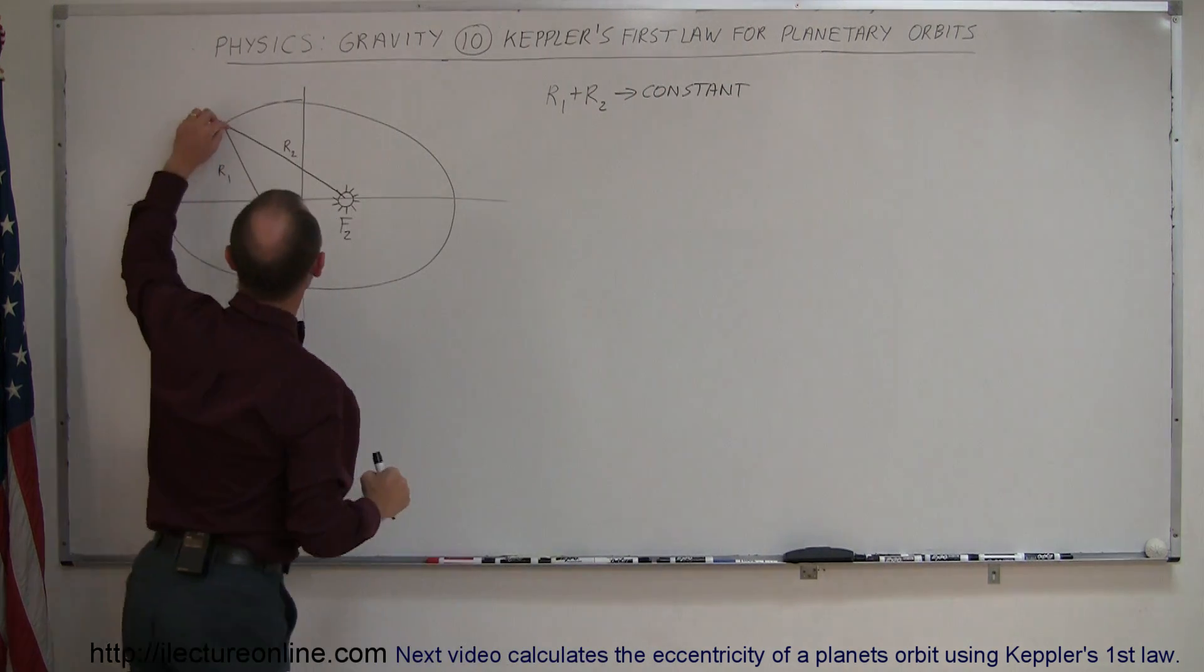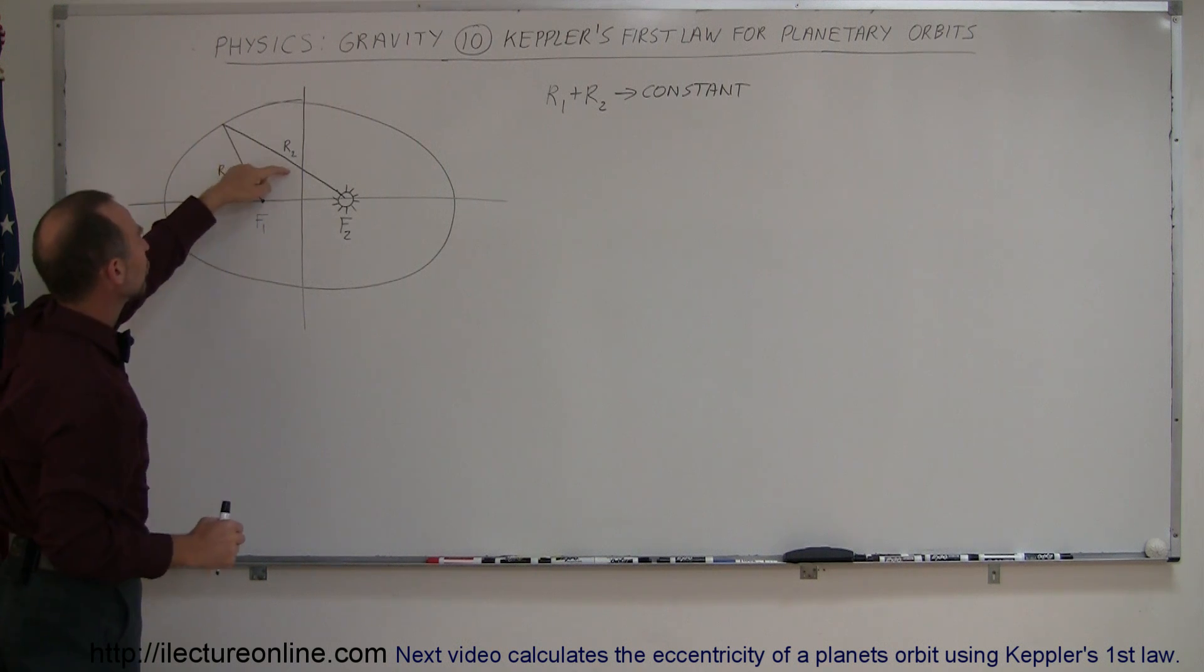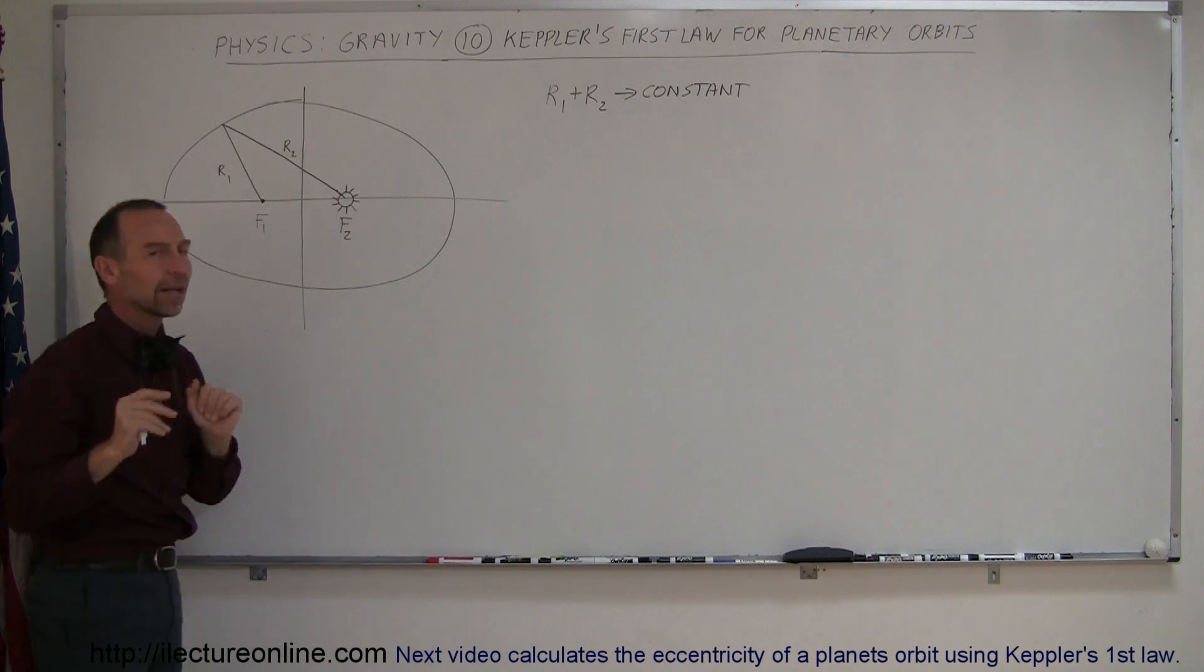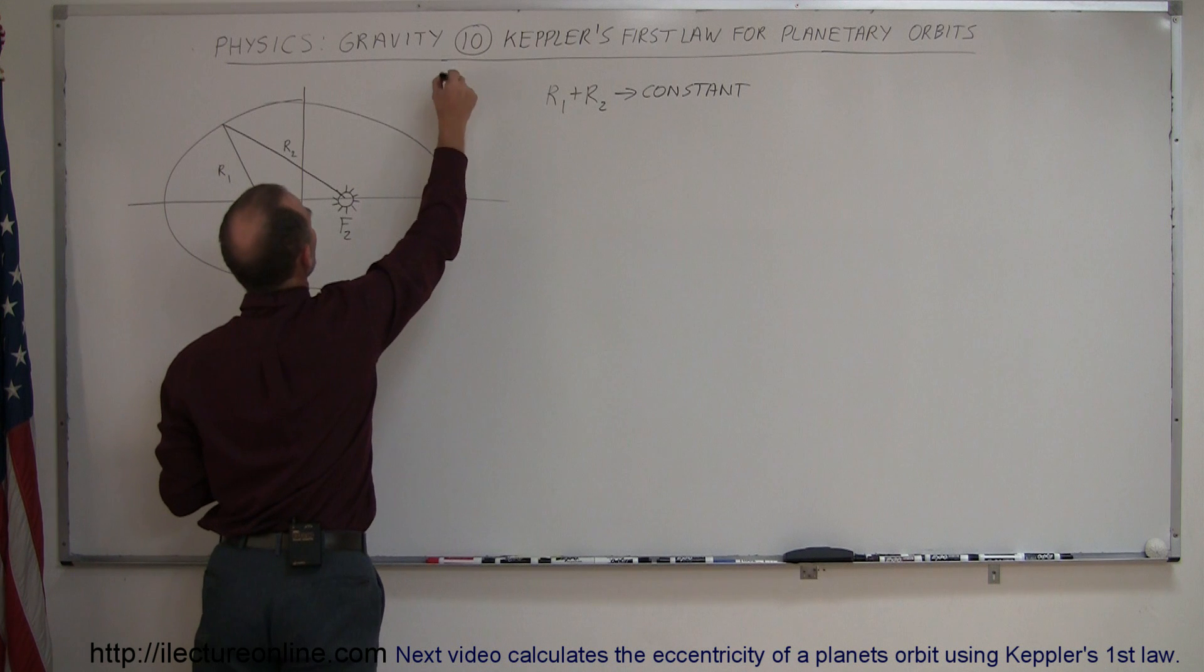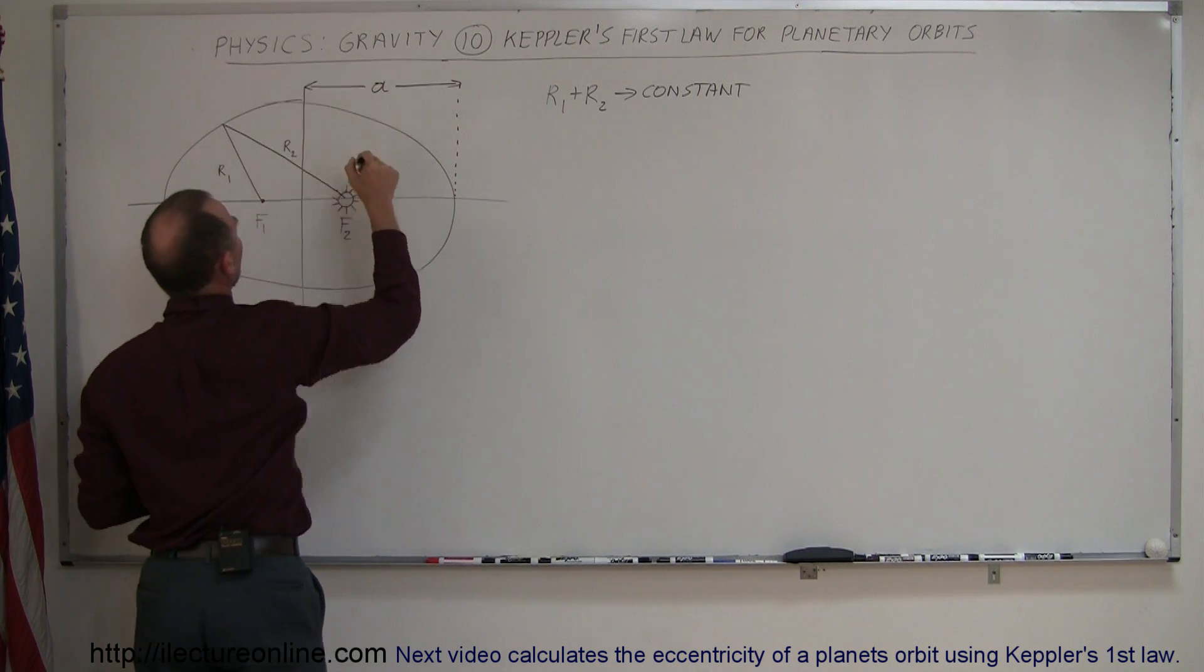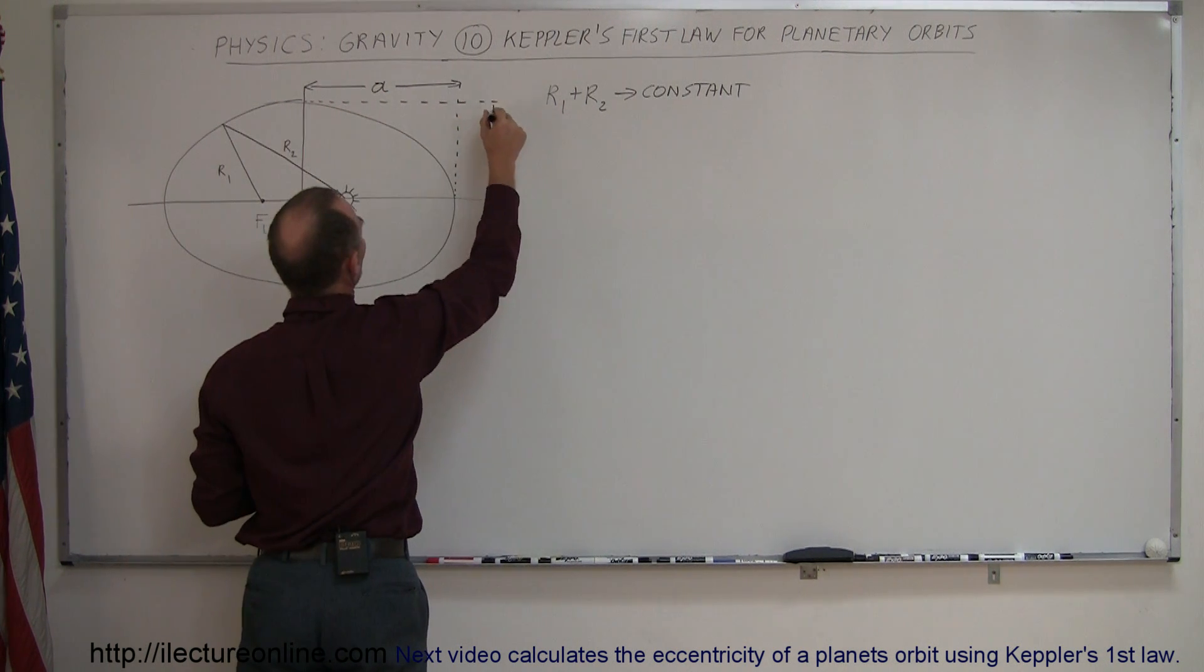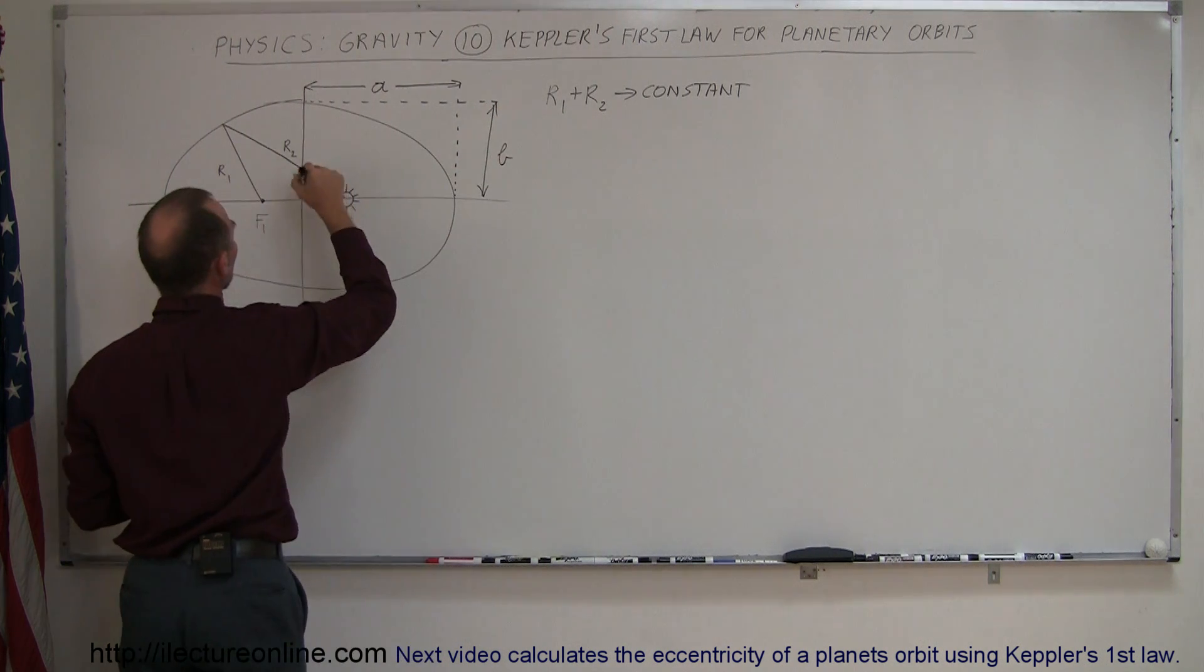Also, you can see that if you take this point and bring it all the way over here, that the sum of the length of R1 and R2 will simply be equal to the full length from there to there. But we'll get into that in just a moment. First, let's assume that the length from the center to here, let's call this length A. And let's call the distance from there to there, the side B. And let's call the distance from the central point to where one of the foci are, let's call this point C.